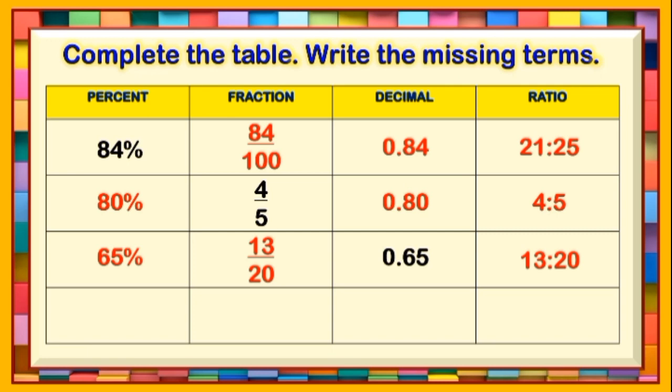The last given number is 11 is to 20. Look for the equivalent percent, fraction, and decimal. The correct answers are 55%, 11/20, and 0.55.